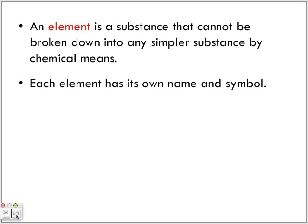An element is a substance that cannot be broken down into any simpler substances by chemical means. Each element has its own name and its own symbol. For example, carbon — the symbol for carbon on the periodic table is C. To find the symbol of each element, just look at the periodic table.